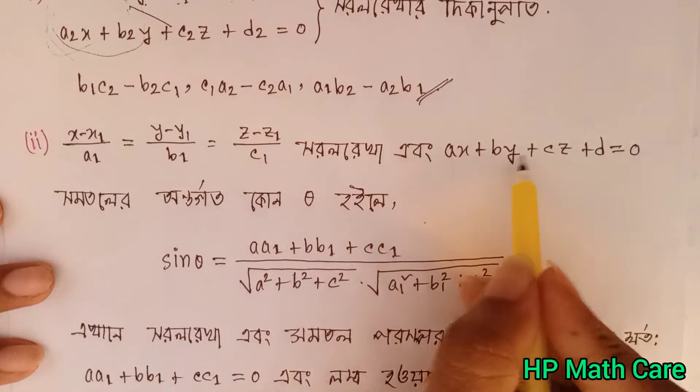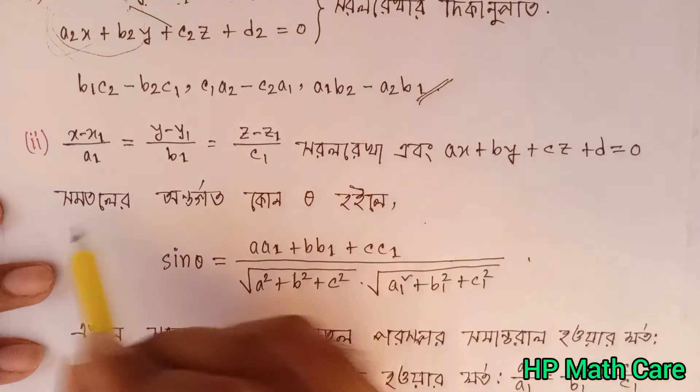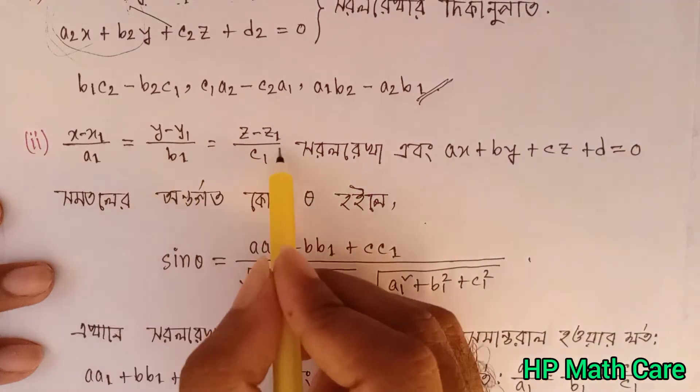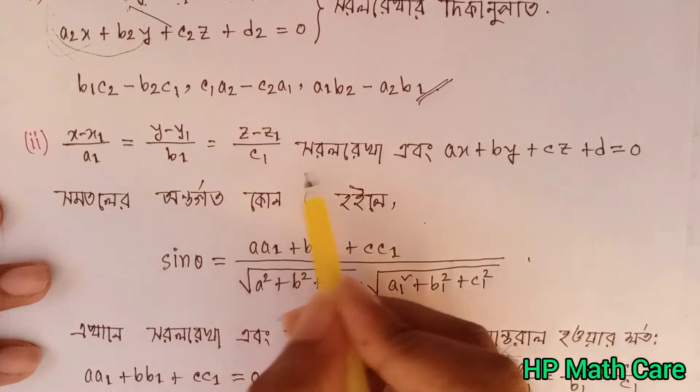We also have the general plane equation: Ax plus By plus Cz plus D equals 0.